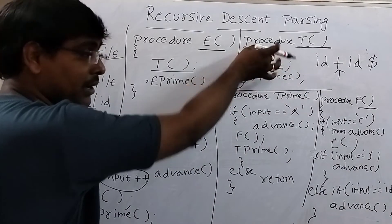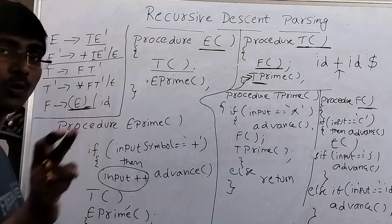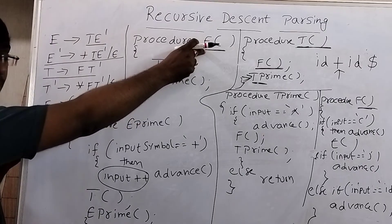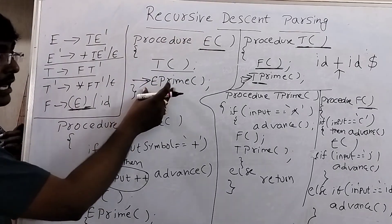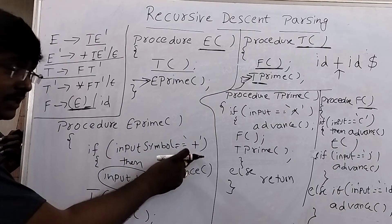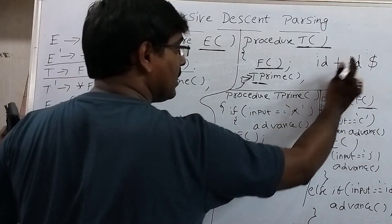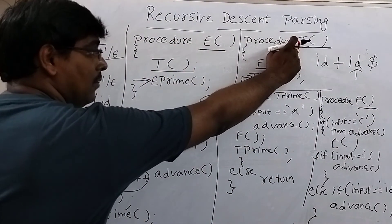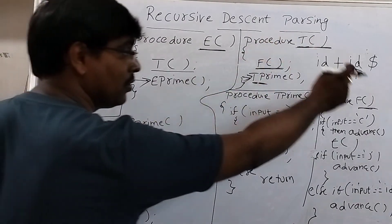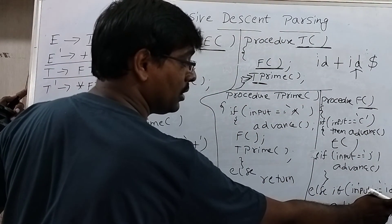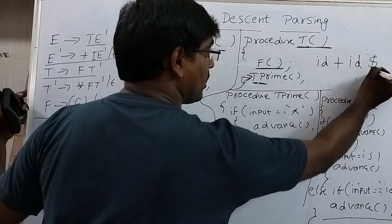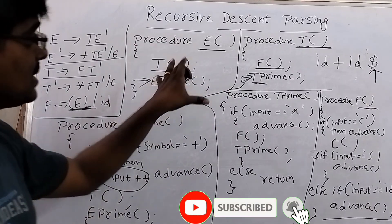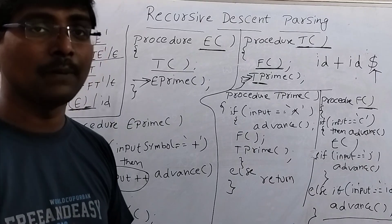T() is now completed, and we return to E() and move to the next statement: E_prime(). In E_prime(), if input == '+': yes, there is a match. Increment the input pointer. Now call T(). T() calls F(). In F(), input == id: match, so advance(). Return from F() back to T(), call T_prime(). T_prime() sees dollar, returns empty. Whenever the dollar is reached, we stop the procedure. This is the complete recursive descent parser construction.